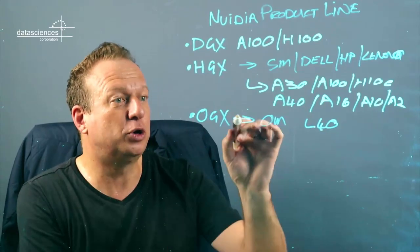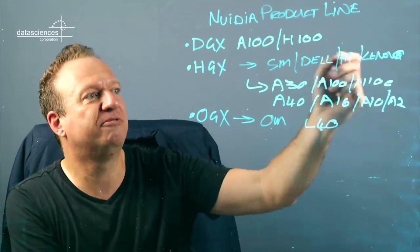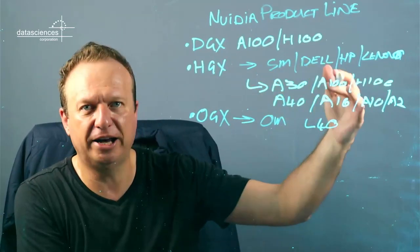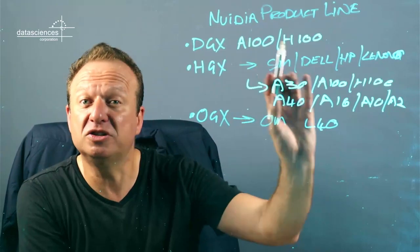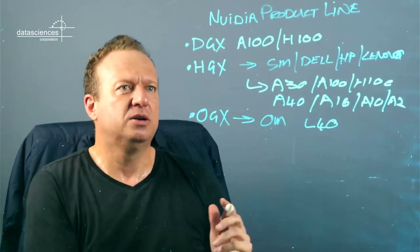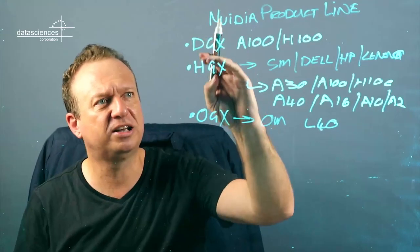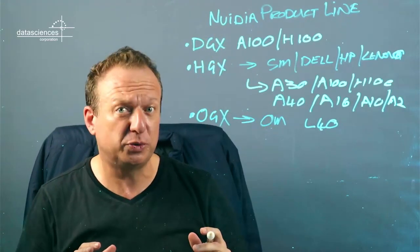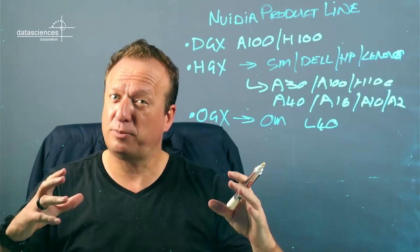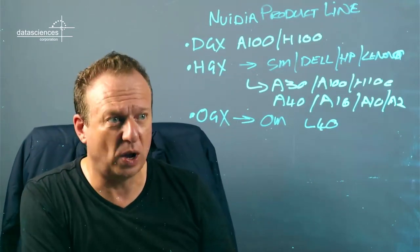You can also get the OGX, not just in the NVIDIA build, but also in the same format through Supermicro, Dell, HP, or Lenovo. They've also been certified to build their version of the OGX. So it gives us huge flexibility into the market. Hopefully, it explains the differences between these, so that when you look at their product map, you can actually put together where they all fit in and what works where.